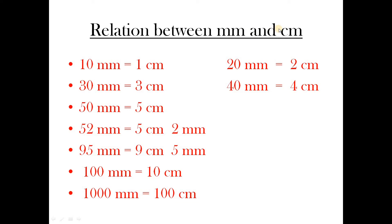Relation between millimeter and centimeter: 10 mm = 1 cm, 20 mm = 2 cm, 30 mm = 3 cm, 40 mm = 4 cm, 50 mm = 5 cm. If 52 mm is given, we write 5 cm 2 mm. If 95 mm is given, we write 9 cm 5 mm. 100 mm = 10 cm, and 1000 mm = 100 cm.